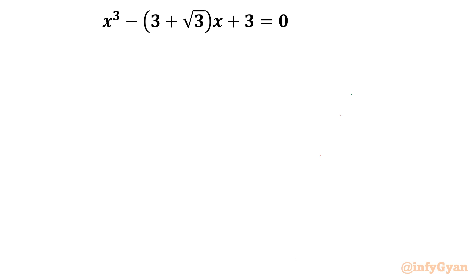The equation is x³ - (3 + √3)x + 3 = 0. I will solve this question by substitution method.